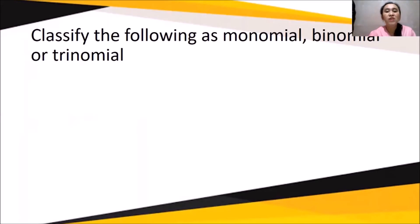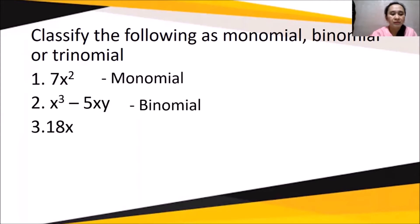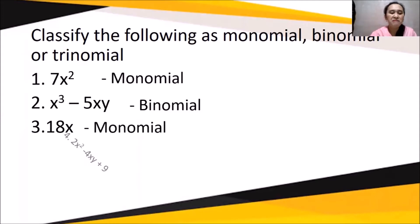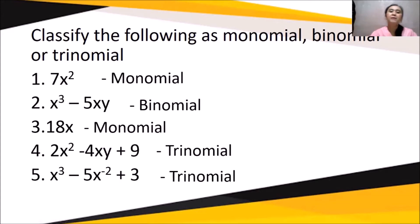Now, classify the following as monomial, binomial, or trinomial. Number one has only one term, therefore it is a monomial. Number two, given x³ - 5xy, we have two terms and it is a binomial. Number three, 18x, has only one term — that is a monomial. Number four has three terms — it is a trinomial. Number five also has three terms — it is a trinomial. I hope it's clear how to determine the number of terms and classify expressions.